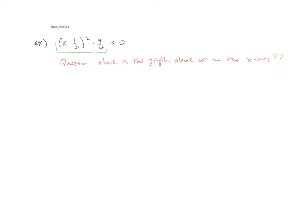So the graph is the parabola that I have in green underlined. The above or on comes from this guy right here. So bigger than or equal to, so above or on. And then finally, the x-axis comes in from the fact that we have a 0 on one side. So where is the graph above or on the x-axis?